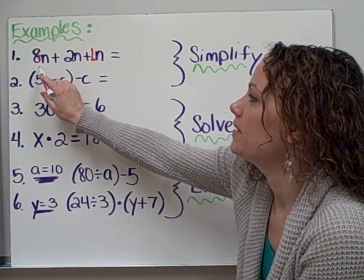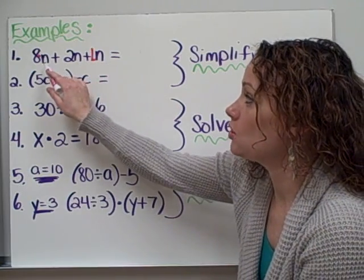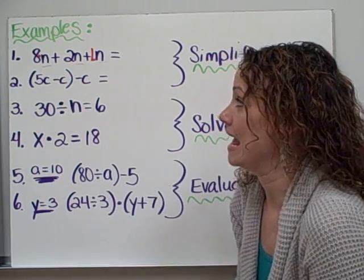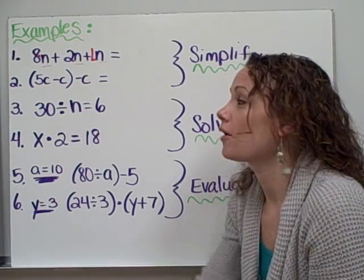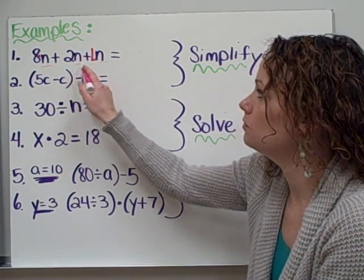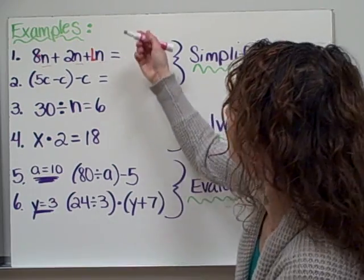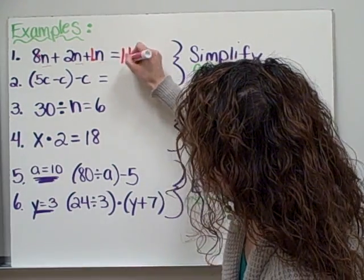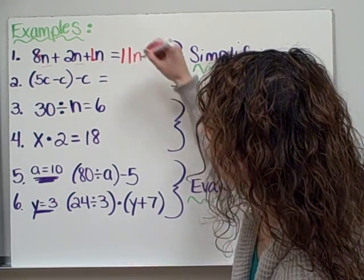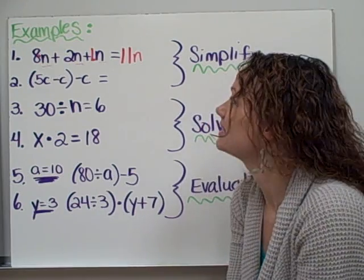So let's take a look at what we have here. We have 8n plus 2n plus n. So since all of my letters are the same, since all of my terms are the same, all being letter n, I'm just going to combine or add the numbers together. So I have 8 plus 2 plus 1. 8 plus 2 equals 10, plus one more is 11.